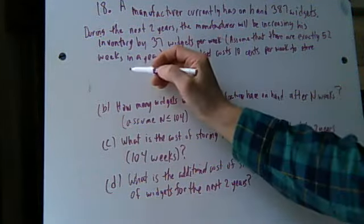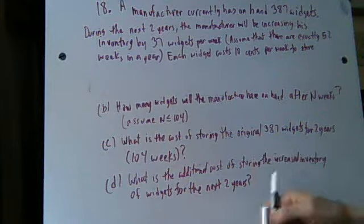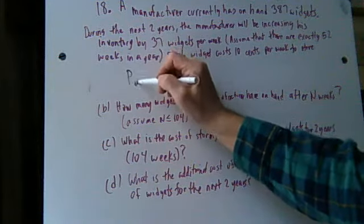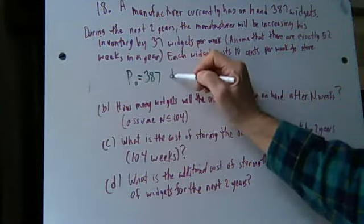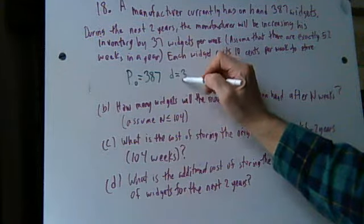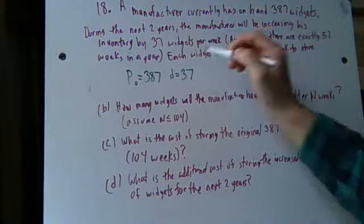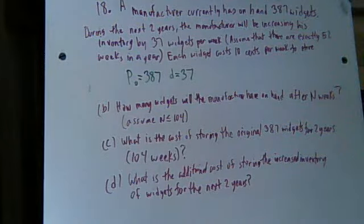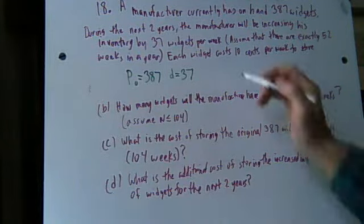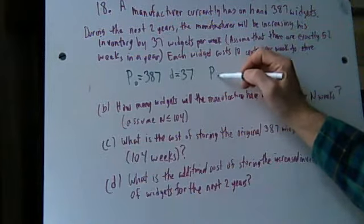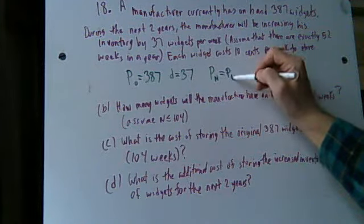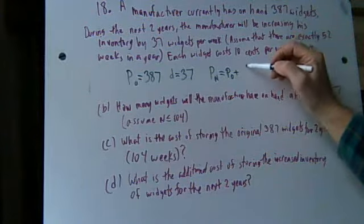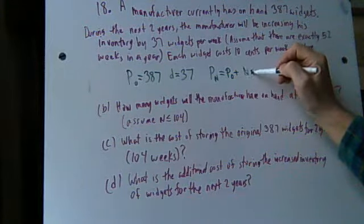As we work on the problem, we know that P0 is equal to 387, that's the number of widgets. We know that D is equal to 37, that's the number of widgets it gets increased every week. And the formula, the number of widgets after n weeks, is going to be P0 plus n times D.